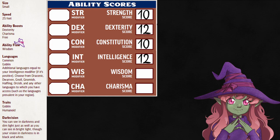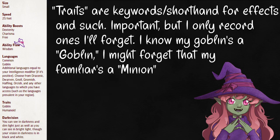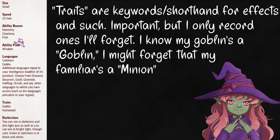So a goblin is dexterous and charismatic, and personally I'm intelligent, but we tend not to be very wise or observant. Most ancestries will use the three boost, one flaw method, but some use two boost, no flaw. Also, a new errata came out that gives all ancestries the option of using two free boosts with no flaw if they want to. So if you hate flaws, there you go.